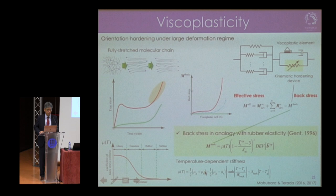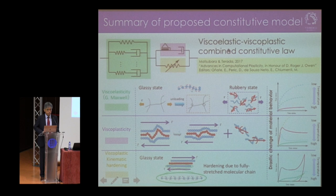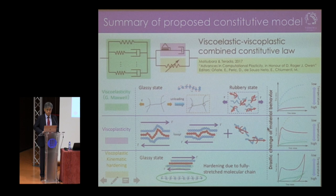To summarize the proposed constitutive model — a viscoelastic-viscoplastic combined constitutive model — it is composed of three separate elements, each reflecting the micro-scale mechanism and representing specific mechanical behavior. It can also represent drastic changes in material behavior according to ambient temperature. Details of the model are presented in the referenced article.